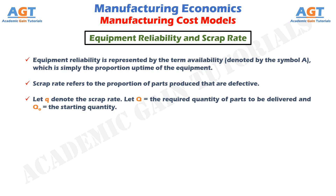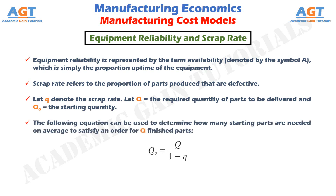Let Q represent the required quantity of parts to be delivered, and Q₀ represent the starting quantity. The following equation can be used to determine how many starting parts are needed on average to satisfy an order for Q finished parts: Starting quantity Q₀ equals required quantity Q divided by (1 minus scrap rate q).